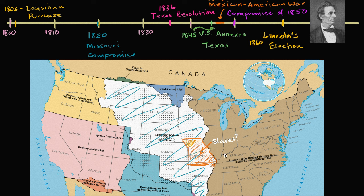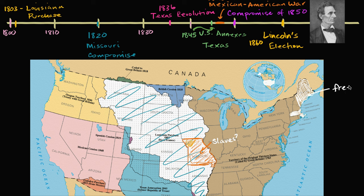Everything they've done so far has been predicated on this tenuous balance between free states and slave states. They debate this in Congress for months. Eventually what they do is say, all right, we can't decide, so we're going to admit the state of Maine at the same time. Maine was already part of Massachusetts, but it's only tenuously connected, so they divide the territory so it can have its own representation in Congress. We can't solve the balance of power problem right now, so we'll extend our compromise — let Missouri in as a slave state at the same time we let Maine in as a free state.